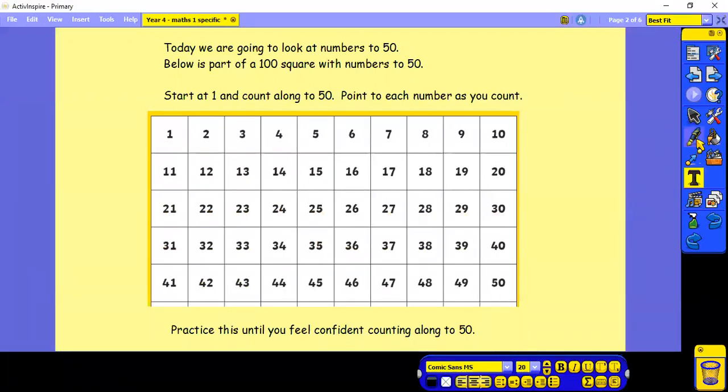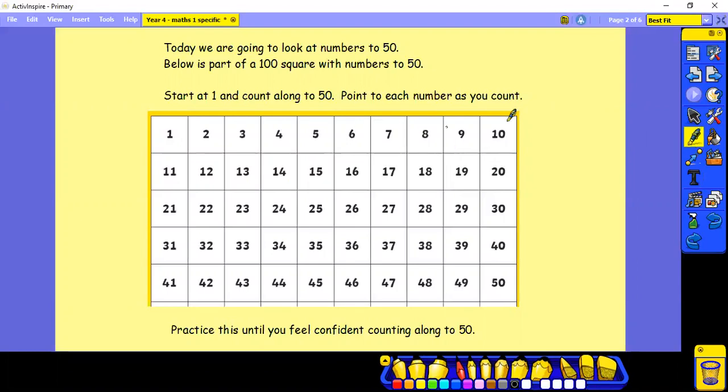Now make sure that you move. So when we get to the 10, we actually then move right back to the other side to pick up 11. The same when we get to 20, to find 21 we have to move to the other side. The same when we're at 30, to get to 31 it's on the other side. And the same for 40, we go to 41 here. Make sure you point to each number as you count and practice this until you feel confident.